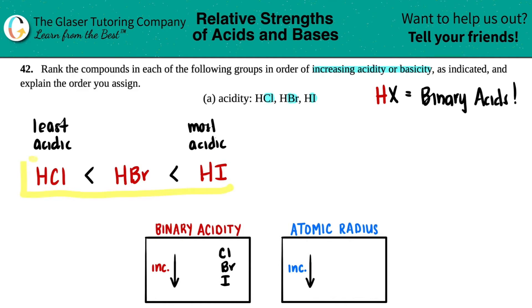Okay, now they do say explain the order you assigned, so we just have to tie this idea into why this trend is the case. This comes from your atomic radius. As you go down a group, your radius will increase. So chlorine, bromine, and iodine, if I did give dots to this, chlorine would have to be a little dot.